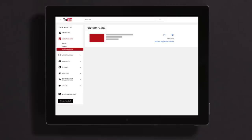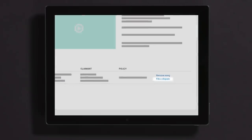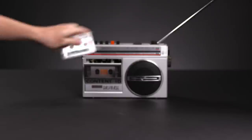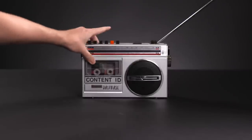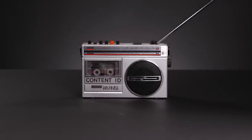You'll know if your video has been claimed by checking the copyright notices section of your video manager. Sometimes claims can be made in error, so YouTube gives you the option to dispute a claim if you believe it to be invalid. And if you work with a distributor or label, they may be able to submit your own tracks for inclusion in the Content ID database.